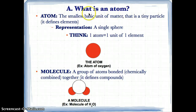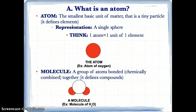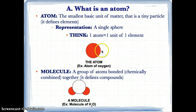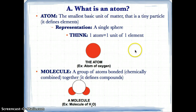Let's first talk about what an atom is. An atom is the smallest basic unit of matter — a tiny particle. Since it's the smallest basic unit of matter, it defines elements, because elements are the simplest form of matter. The way you represent an atom is as a single sphere, because one atom represents one element. Think: one atom equals one unit of one element.